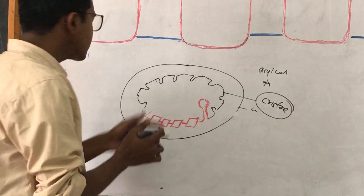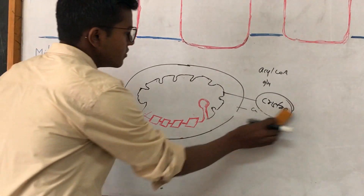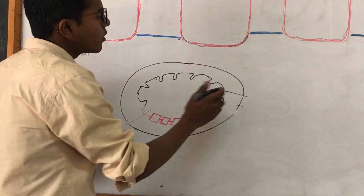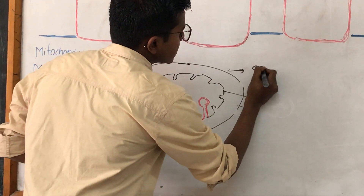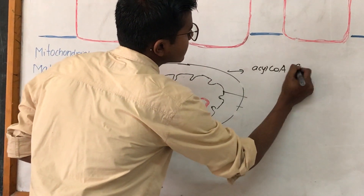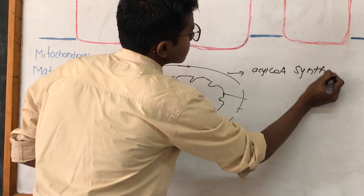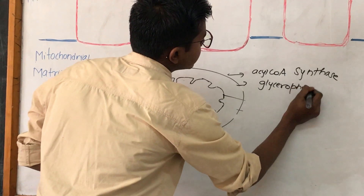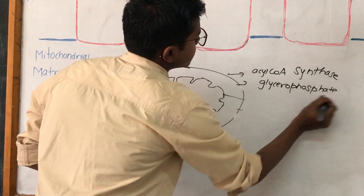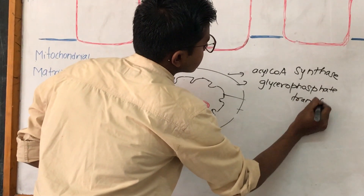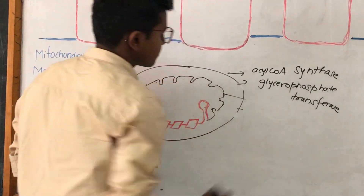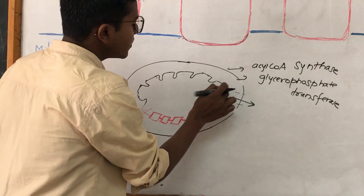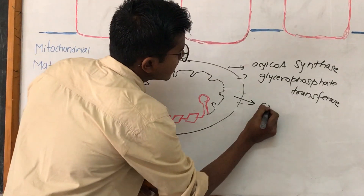The enzymes found on the outer membrane are acyl coenzyme A synthase and glycerophosphate transferase. In the intermembranous space — that is, between the inner membrane and the outer membrane — the enzymes are creatine kinase and adenine kinase.